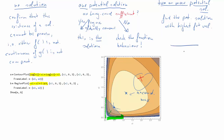The question is whether the Lagrange conditions are sufficient. Both functions are indeed concave, so we have sufficient conditions, and that one potential solution is the solution to the problem.